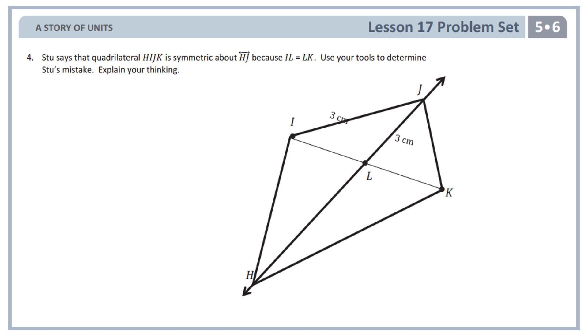Our last problem, problem four, is a little bit tricky. Problem four says, Stu says the quadrilateral HIJK, it's this one here, HIJK, is symmetric about line HJ because line IL is equal to line LK. Use your tools to determine Stu's mistake. Explain your thinking. Okay, so things that are happening here. The problem says that line HJ is the point of symmetry. So they're saying that this triangle here is symmetric to this triangle here. And their reason is because line IL is equal to line LK. Okay, so they're saying this line is equal to this line, and therefore it has to be symmetrical. Let's think about this for a second.